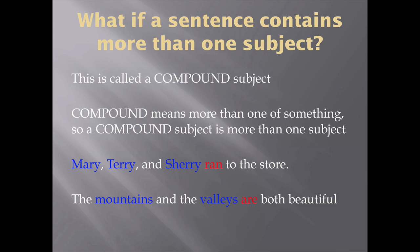The next example: the mountains and the valleys are both beautiful. You have two subjects here — mountains and valleys. They are both in the state of being beautiful, so you've got a linking verb, 'are,' managing two subjects. You would call that a compound subject.